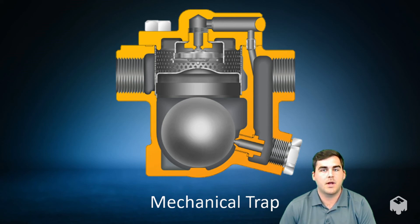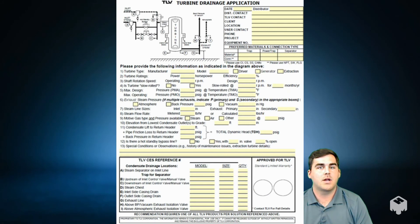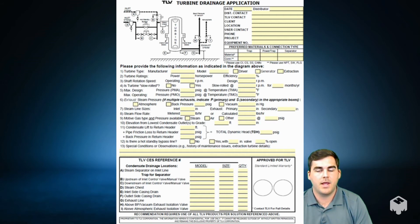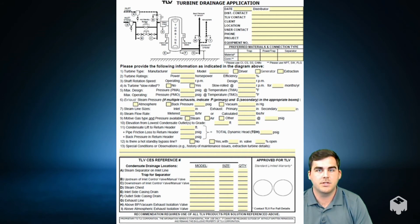Mechanical traps are what would generally be recommended by TLV. TLV makes it simple through our Turbine Drainage Applications form, or TDA. We will help you specify the ideal drainage device for each drainage location based on your specific turbine.